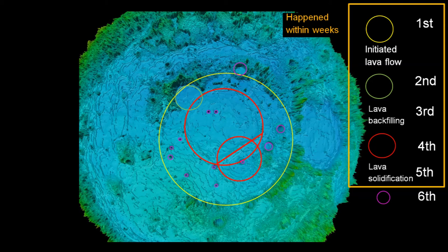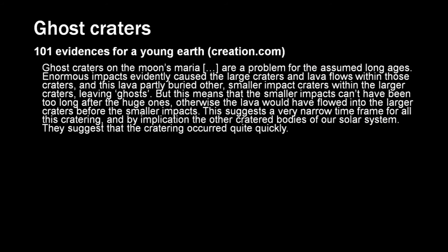Those faint red craters are called ghost craters. It is one of the arguments placed on a website containing 101 evidences for young earth on creation.com. It says ghost craters on the moon's maria are a problem for the assumed long ages. Enormous impacts evidently caused the large craters and lava flows within those craters and this lava partially buried other smaller impact craters within the large craters leaving ghosts. But this means that the smaller impacts can't have been too long after the huge ones otherwise the lava would have flowed into the larger craters before the smaller impacts. This suggests a very narrow time frame for all this cratering and by implication the other cratered bodies of our solar system. They suggest the cratering occurred quite quickly.